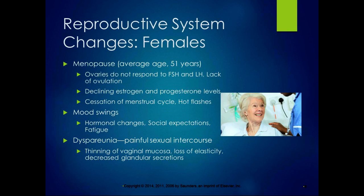With males and females, there are different changes in the reproductive system. Women on average reach menopause around age 51, where the ovaries stop responding to follicle-stimulating hormone and luteinizing hormone and stop ovulating. This leads to declining estrogen and progesterone levels, cessation of the menstrual cycle, and hot flashes. Mood swings, hormonal changes, social expectations, and fatigue can all be associated. Dyspareunia — painful sexual intercourse — can occur because of thinning of the vaginal mucosa, loss of elasticity, and decreased glandular secretions.